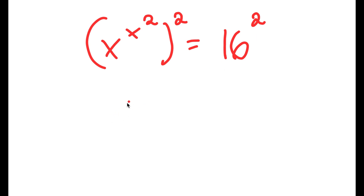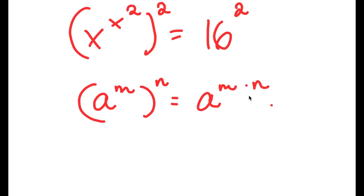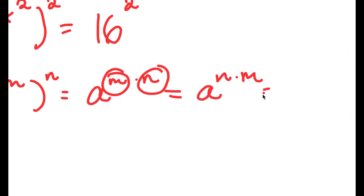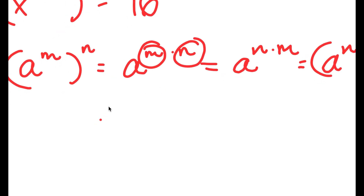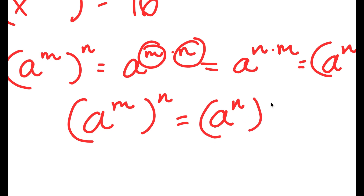Now, if I have something in the form a to the power of m to the power of n, this is the same thing as a to the power of m times n. And m and n are interchangeable, meaning this is the same thing as a to the power of n times m. So if a to the power of m to the power of n equals a to the power of m times n, then a to the power of n to the power of m should equal the same. In simpler terms, a to the power of m to the power of n is the same thing as a to the power of n to the power of m.